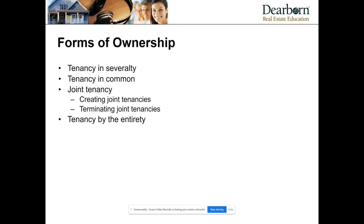In joint tenancy and tenancy by the entirety, you have something called the right of survivorship. Right of survivorship means that if you have ownership in a property and one of the individuals dies, their piece of the ownership dissolves into the remaining owner or owners. This only applies to individuals — the only two ways a corporation or company can take title are in severalty or in common — so when we talk about joint tenancy or tenancy by the entirety, a corporation won't be in play.